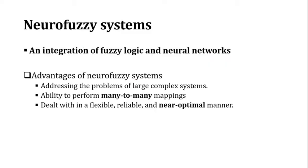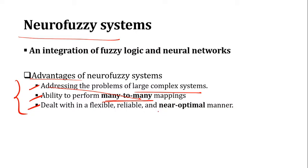This is called the neurofuzzy system, which is an integration of fuzzy logic and neural networks. It gives you the advantage of addressing the problems of large complex systems. The major advantage is many-to-many mapping ability. The neurofuzzy system is pretty flexible and gives you near-optimal solutions.